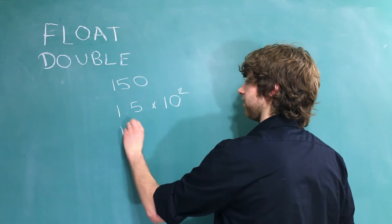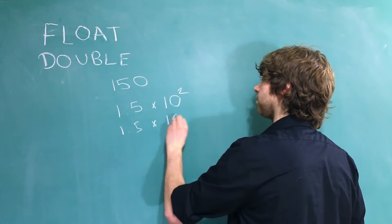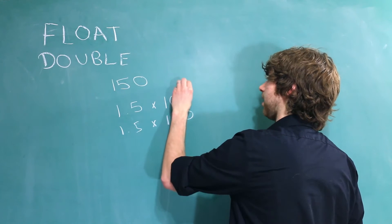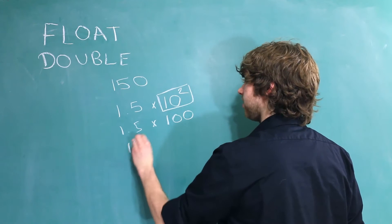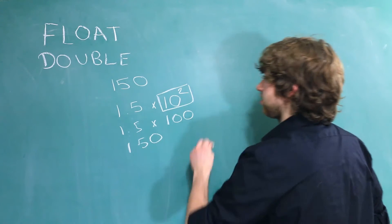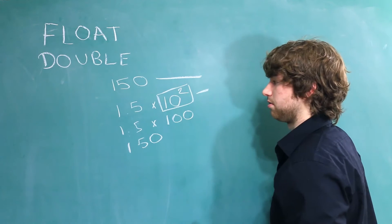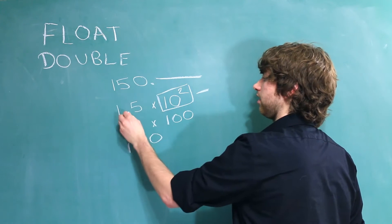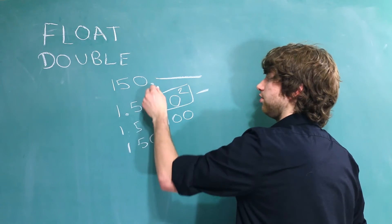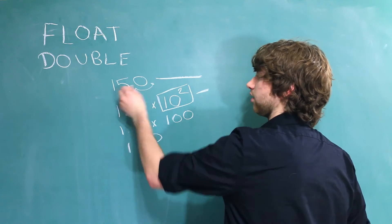And if you work this out, you would get 1.5 times 100, because 10 to the second power is 100. And then 1.5 times 100 is 150. So you can see, these are two different ways to present the same value. And if you think of where the decimal point is, in this situation, it's here. And in this situation, it's here. So you can kind of see it as floating across the numbers.